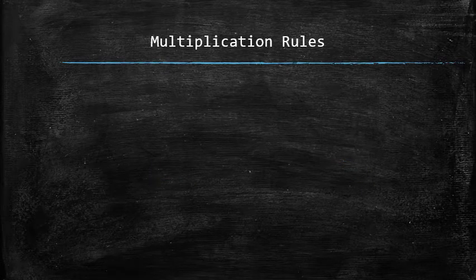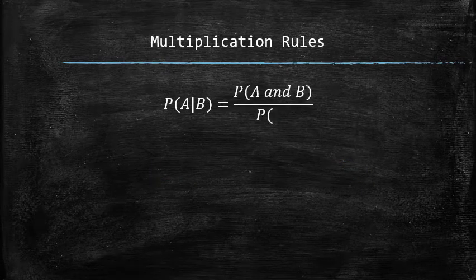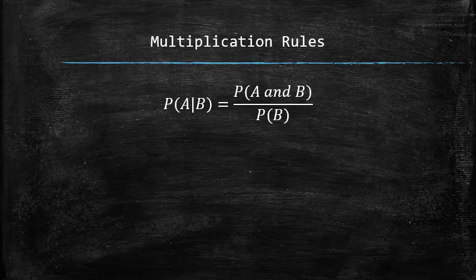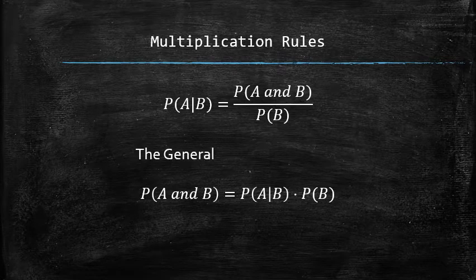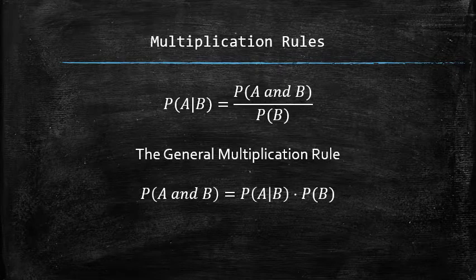Consider the conditional probability formula again. Let's multiply both sides by the probability of B and swap the sides of the equation. This result is known as the general multiplication rule, which allows us to find the probability of the intersection of any two events.